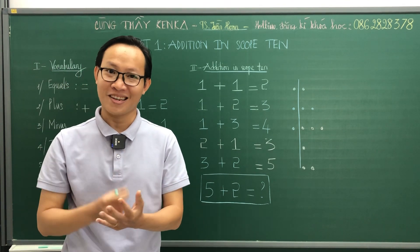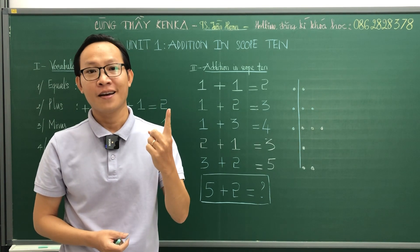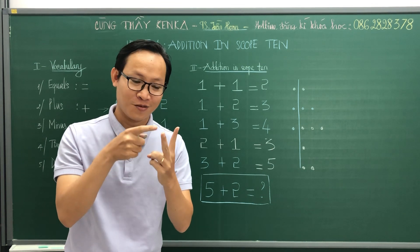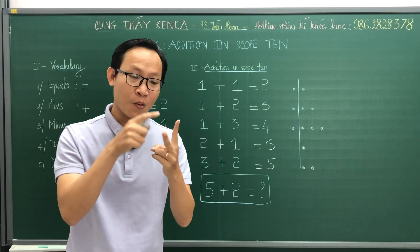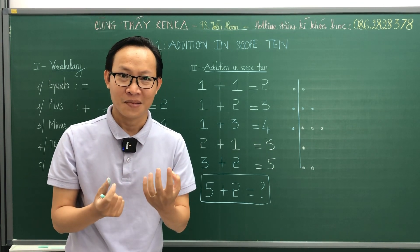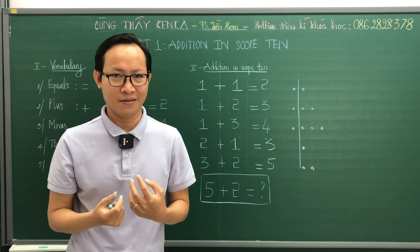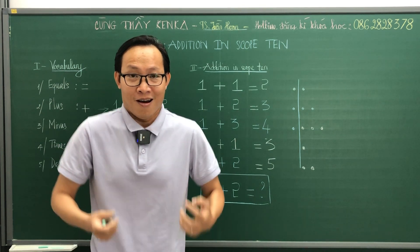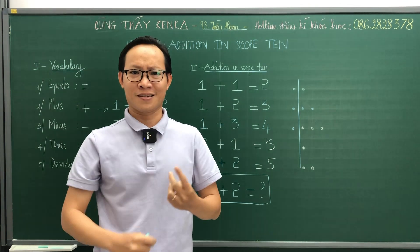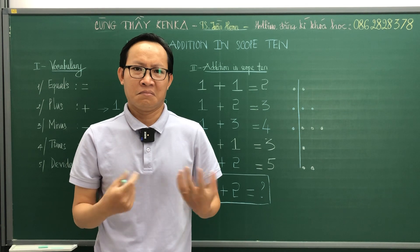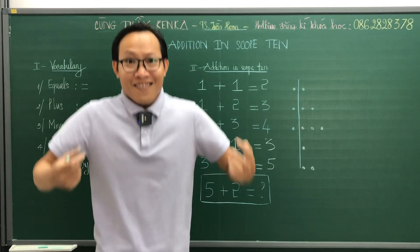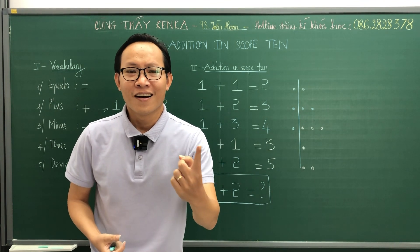One student has one teacher and one student. The teacher asks his student: one plus one, how many? The student says: I don't know, it's difficult for me. The teacher says: I'm sorry, it's difficult for me. Use a monkey.